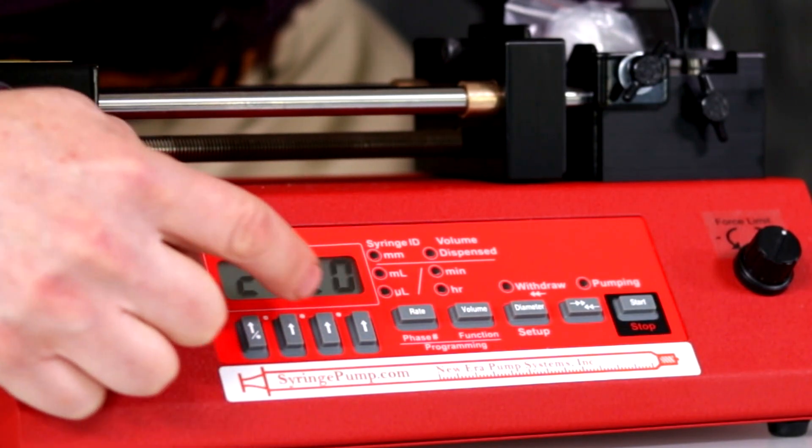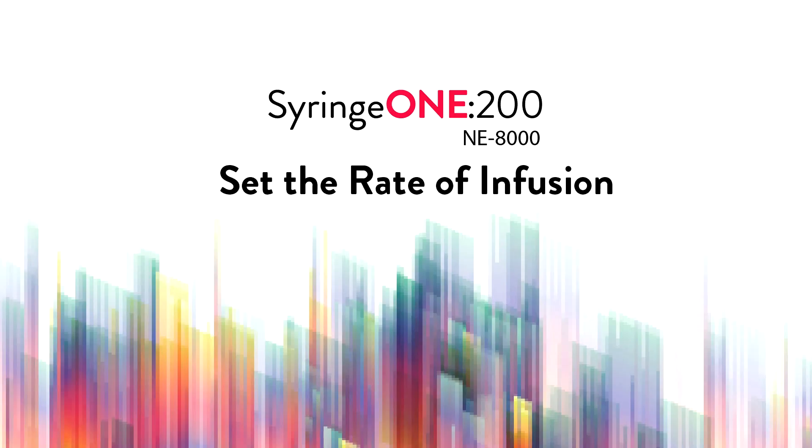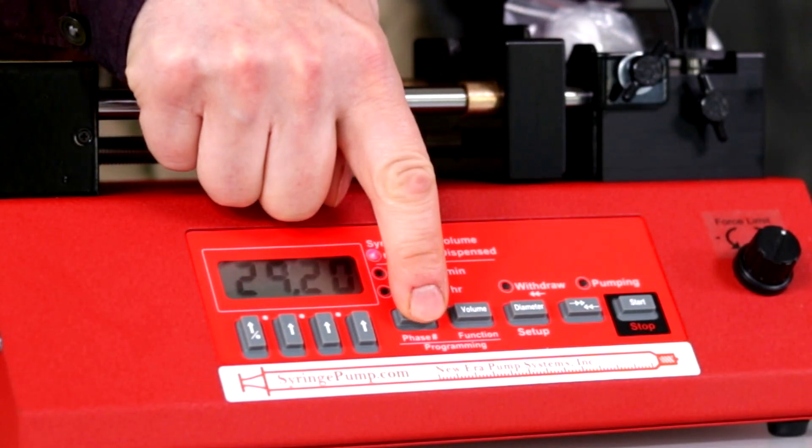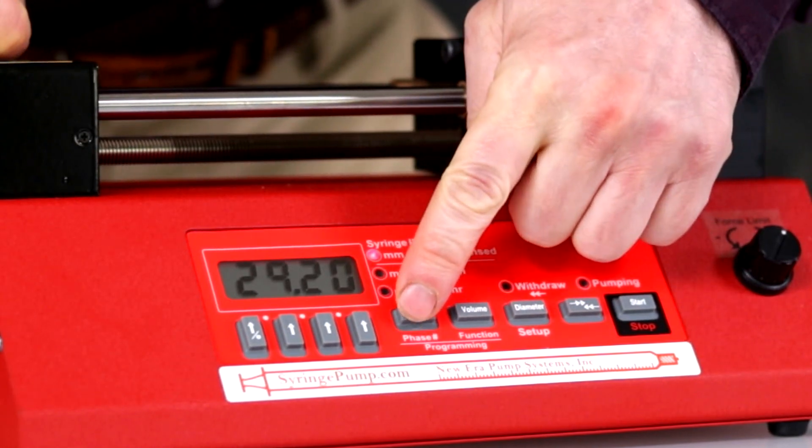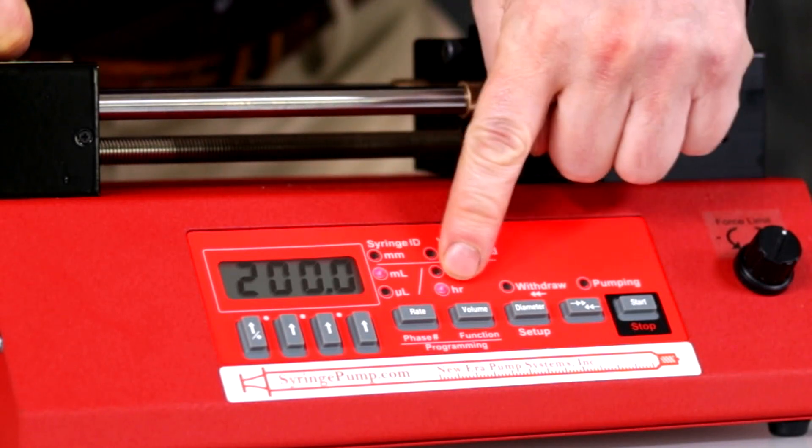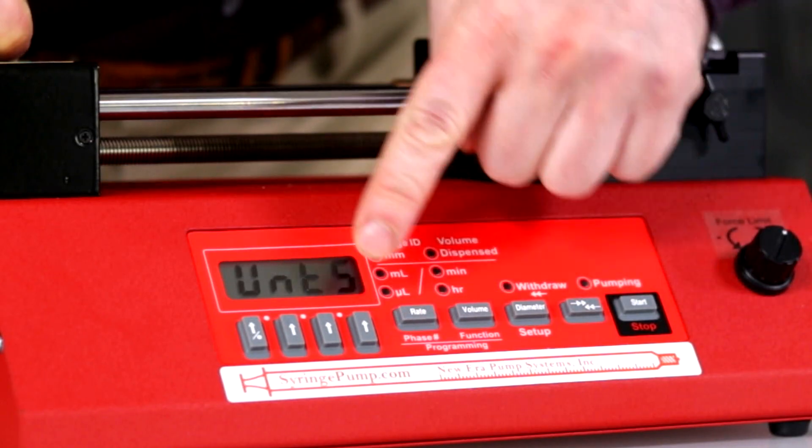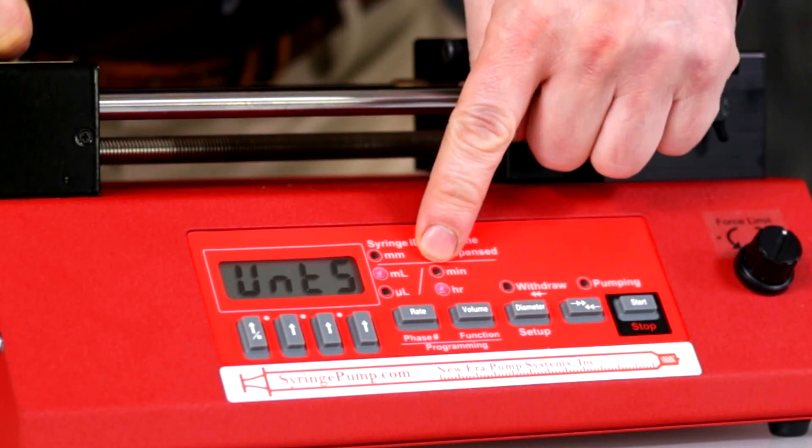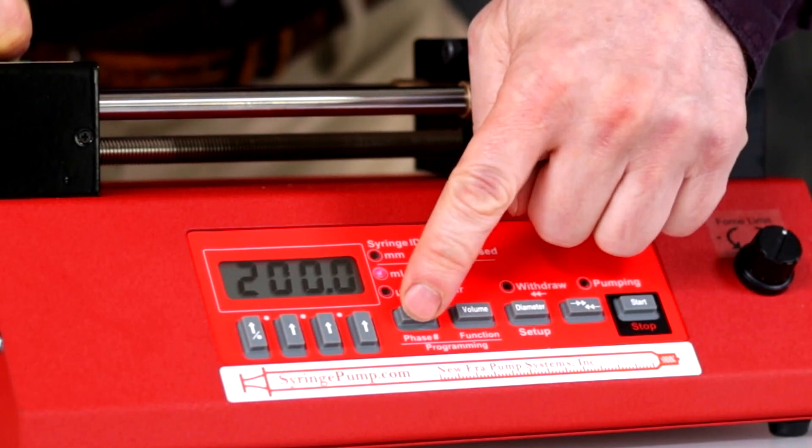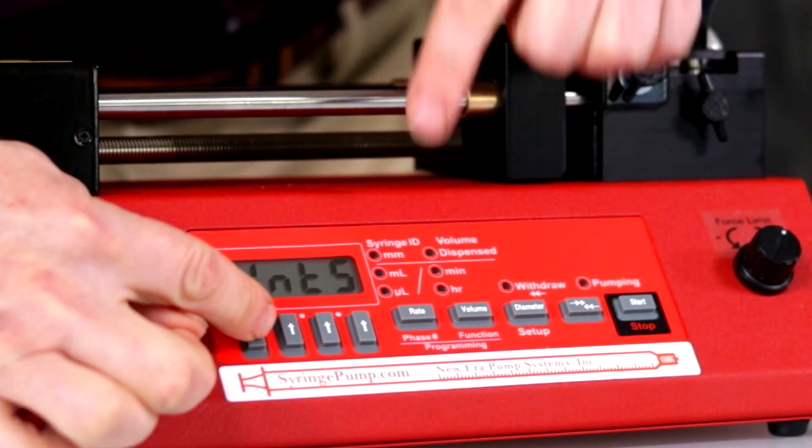NE-8000 set the rate of infusion. To set the rate of infusion, press the rate key. The currently stored rate is 200 milliliters per hour. To change the units of the flow rate, press the rate key again. The display will show UNTS with the LEDs blinking. You can only change the setting while the LEDs are blinking. Use any up arrow key to change the units: milliliters per hour, microliters per hour, milliliters per minute, or milliliters per hour.